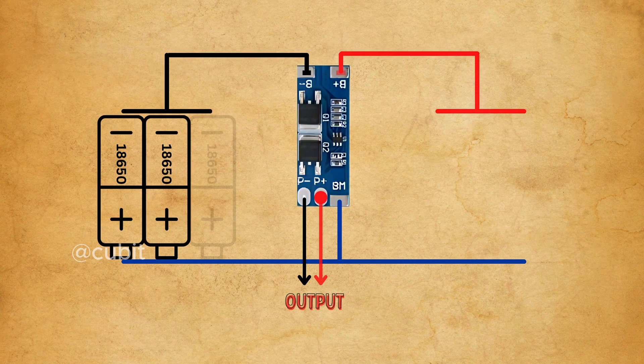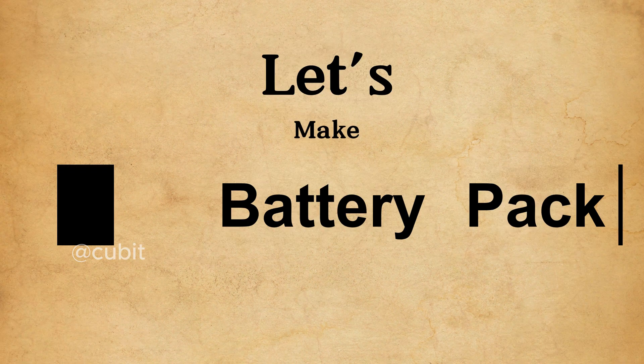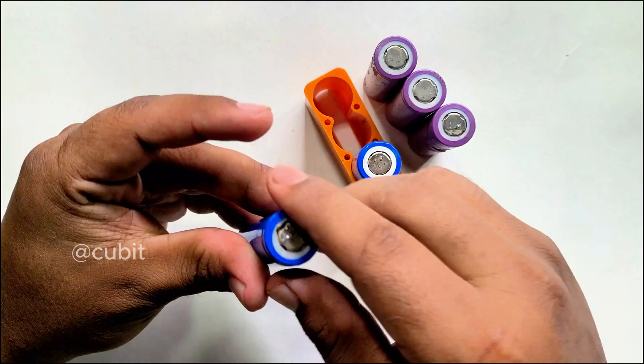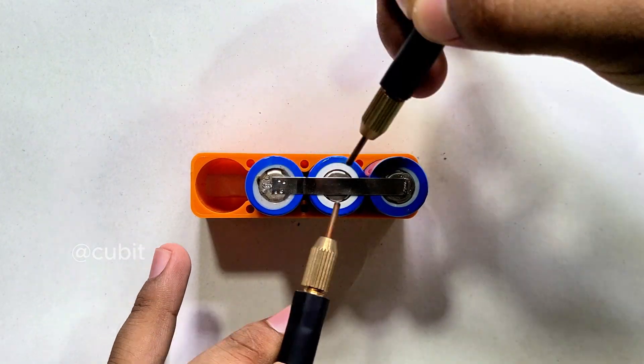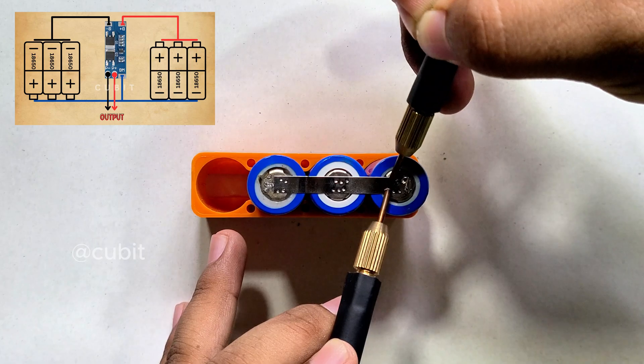Here is the circuit diagram. So, let's make the battery pack first. We spot weld the nickel strip to the battery for a strong joint. Now, make the battery pack using the circuit diagram.